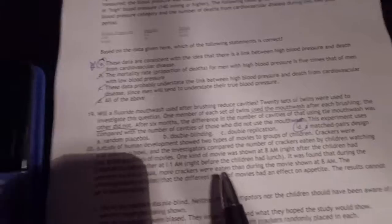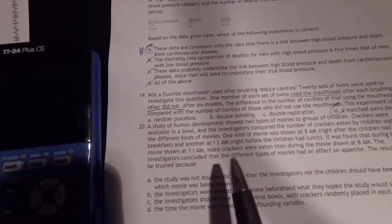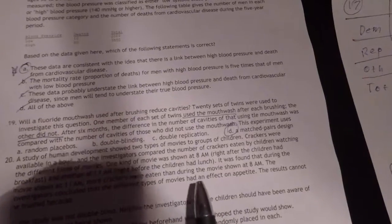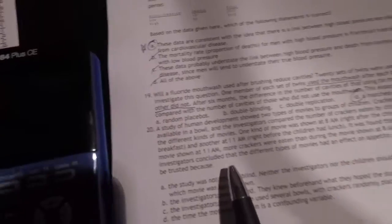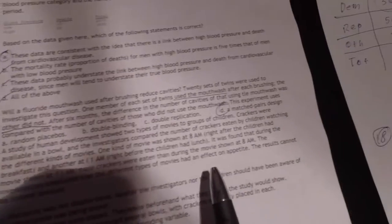One kind of movie was shown at 8 a.m., right after the children had breakfast, and another at 11 a.m., right before the children had lunch. It was found that during the movie shown at 11 a.m., more crackers were eaten than during the movie shown at 8 a.m. The investigators concluded that different types of movies had an effect on appetite.